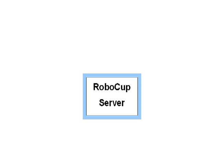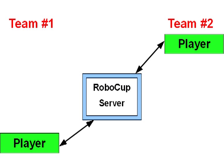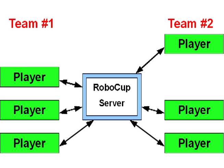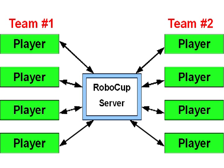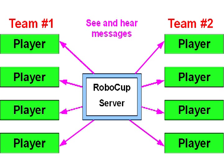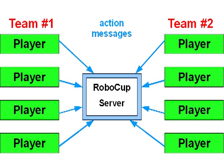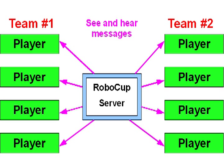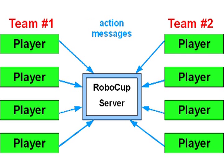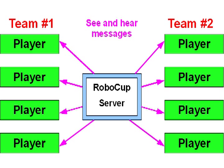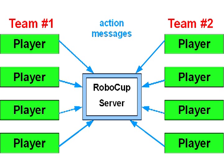In this video, we will imitate RoboCup Soccer Agents. In simulated RoboCup Soccer, the server simulates a soccer game, handles communication with the players, and enforces the rules of the game. The players connect to the server and receive information about what they can see and hear at regular time intervals. In response, they can perform actions like kicking the ball, dashing, and turning.